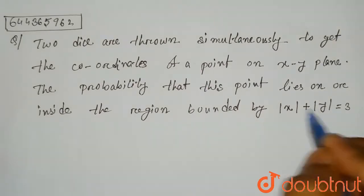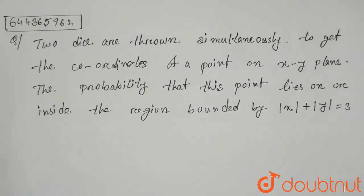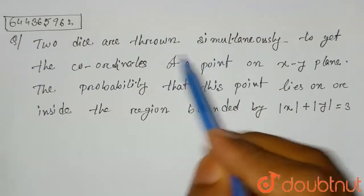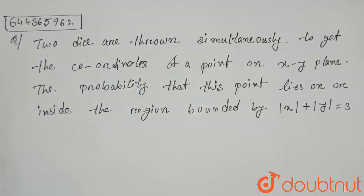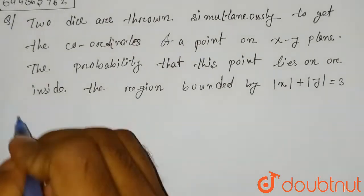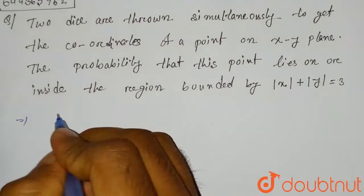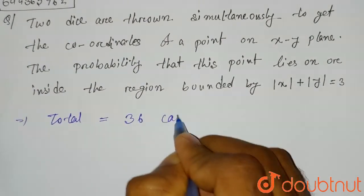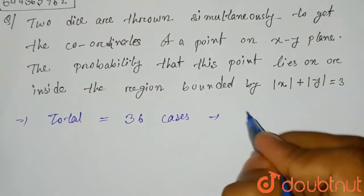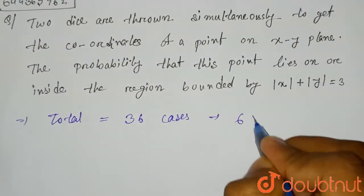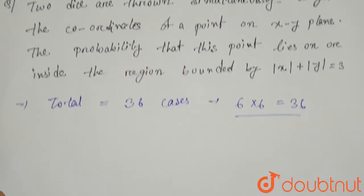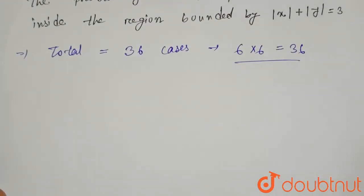So here we have to find the point supporting this equation. First of all, if we want to find out the coordinates, we have to throw two dice simultaneously. If we throw two dice simultaneously, there will be total 36 cases, because one die will have six cases and as we are having two dice, it will be multiplied by six again. Now if we look at the outcomes after throwing the two dice.